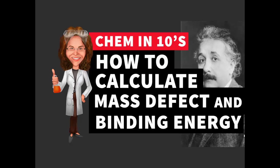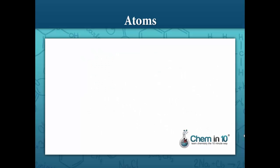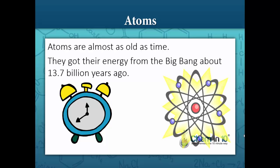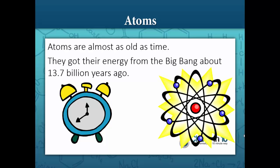How to calculate mass defect and binding energy. Atoms are almost as old as time. They got their energy from the Big Bang about 13.7 billion years ago.